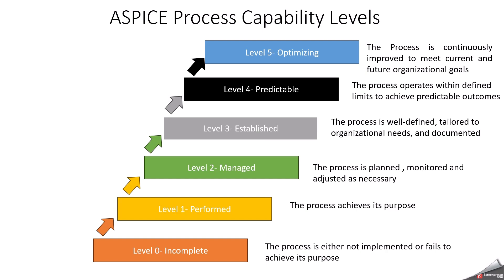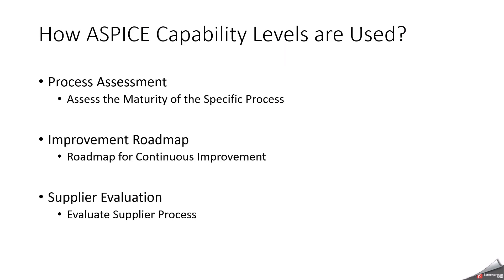These are the ASPICE process capability levels. Next, how ASPICE process capability levels are used. There are three methods: one is ASPICE assessment, meaning process assessment; another one is improvement roadmap; and supplier evaluation. In process assessment, ASPICE levels are used to assess the maturity of specific processes in the development of automotive software and systems. Organizations may undergo an assessment to determine where they stand on the ASPICE scale and identify areas of improvement.